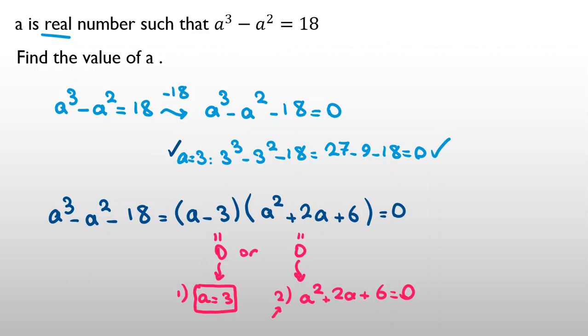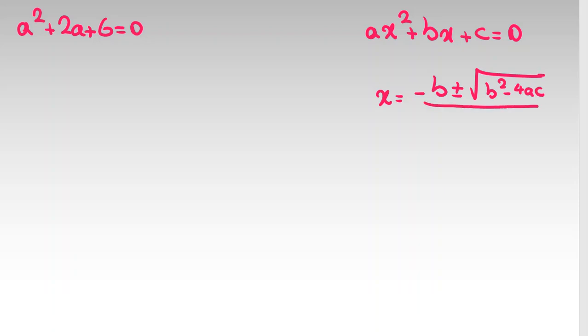a squared plus 2a plus 6 equals 0. All right. For this, we should know the quadratic formula. ax squared plus bx plus c equals 0. And the formula is x equals negative b plus minus square root of b squared minus 4ac all over 2a. And we call delta or discriminant the thing inside the square root here, b squared minus 4ac. If x is real, it should be at least 0.